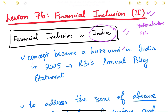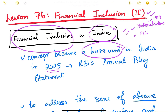Financial inclusion became a buzzword in India in 2005. As we saw, nationalization and priority sector lending norms were there even before 2005 — bank nationalization first happened in 1969 — but at that time financial inclusion was not such a big buzzword. It became a famous concept after the RBI's Annual Policy Statement of 2005, in which RBI talks about its policies and decisions regarding the economy.